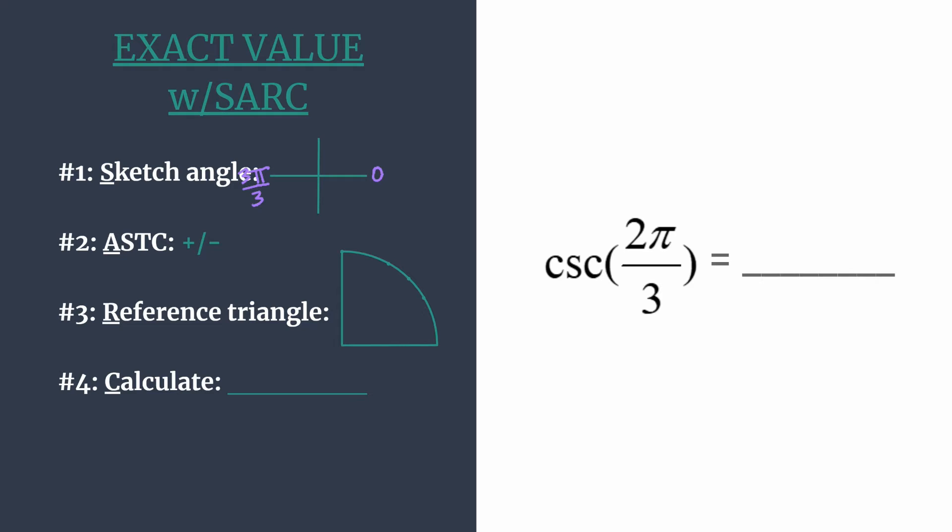So you'd have π over 3 in the first and 2π over 3 in the second. So there's the terminal side of our angle and a quick sketch to show you how we got there.